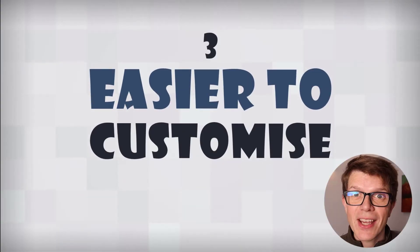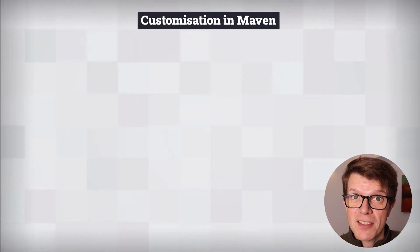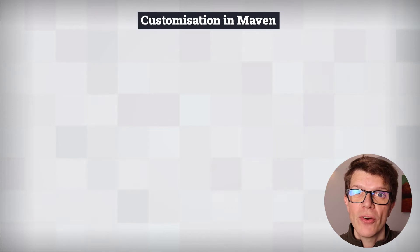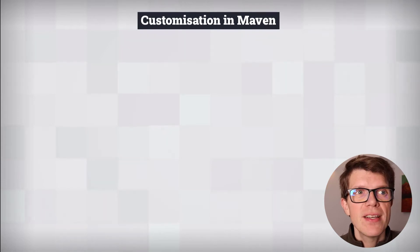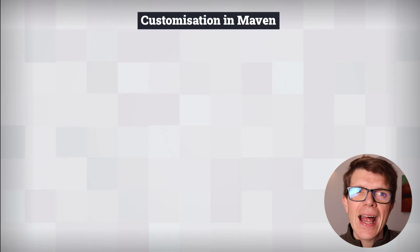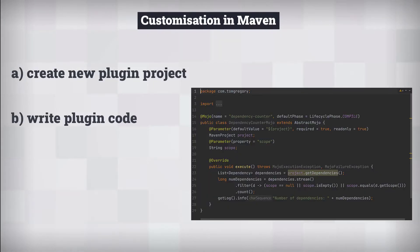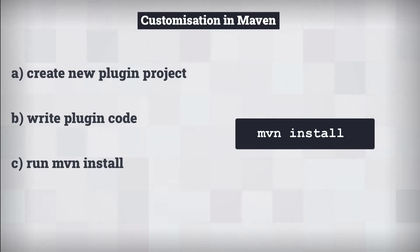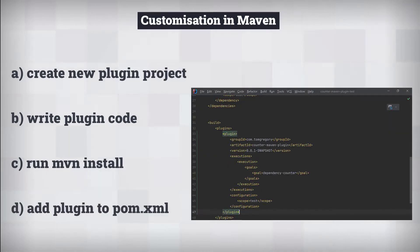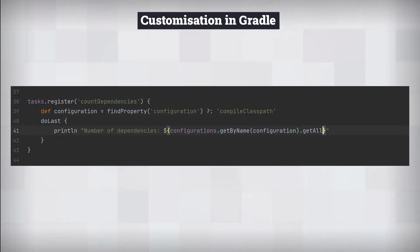Gradle is easier to customize than Maven. The only way to add custom build logic in Maven is to use an existing plugin or create your own. To print out the dependency count in a Maven project, you have to: create a new Maven plugin project, write the code to calculate and print the dependency count, run 'maven install' against the plugin project, then add the plugin to the pom.xml. In Gradle, you just add a single task to the build script.